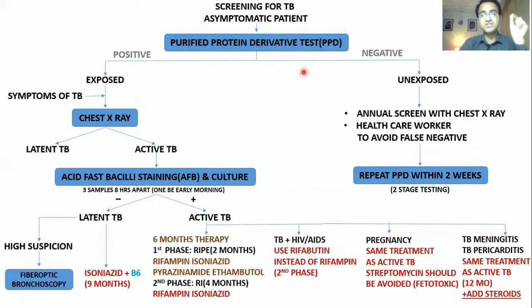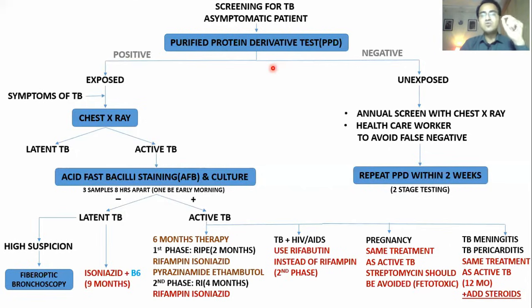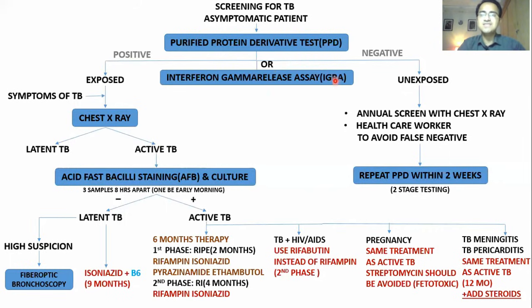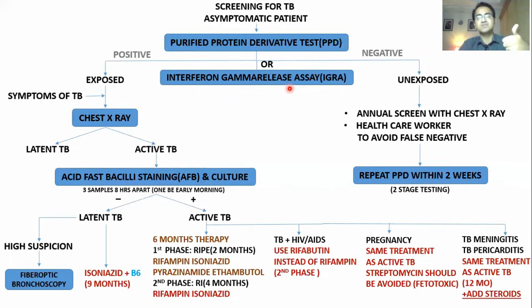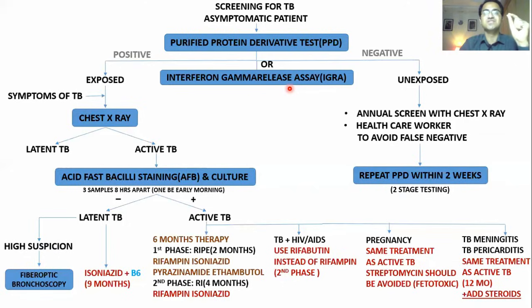If a person is vaccinated for BCG, they will always be PPD positive — which is a false positive. To counter this flaw of the PPD test, another test is used: the Interferon Gamma Release Assay, or IGRA test. In the IGRA test, it directly tells you whether the patient has positive or negative exposure — you do not need to measure any induration. IGRA is a better test than PPD and is not affected by BCG vaccination, so there is no false positive for BCG-vaccinated patients.